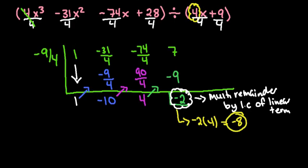A lot of times people choose long division when there's not a 1 in front of the x term. You can still use synthetic division, but there's a lot to remember: divide every term by the leading coefficient, deal with fractions throughout, and multiply the remainder by whatever you originally divided by.